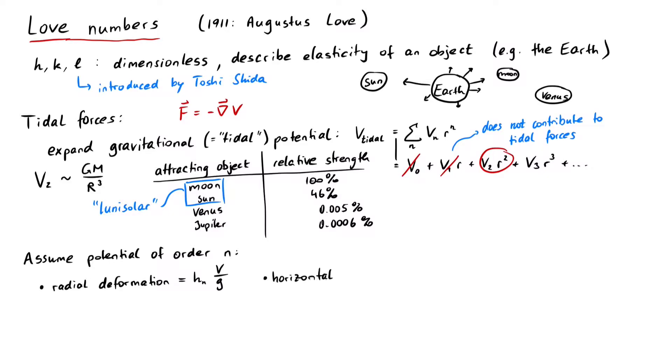We will also get a horizontal displacement, described via l_n, times the gradient of V divided by g. Now let's pause for a moment and notice the quantity V over g. This has dimensions of length, and can hence be interpreted as the deformation of the planet, or as the so-called equilibrium surface, if we consider for instance an ideal ocean.